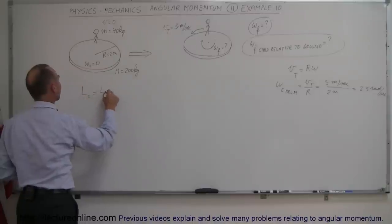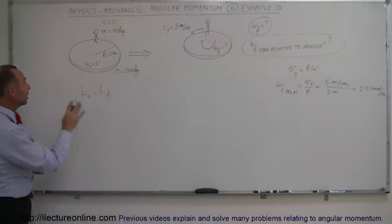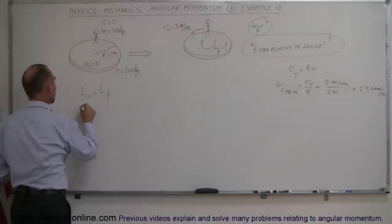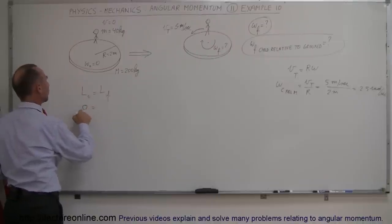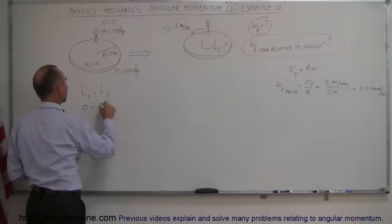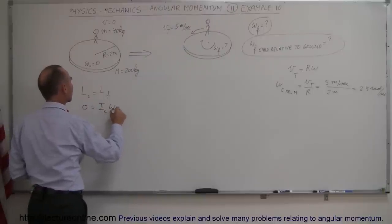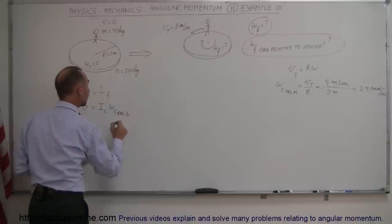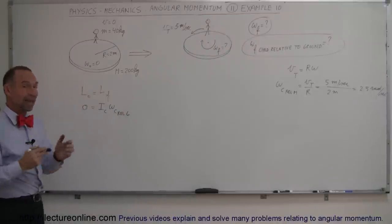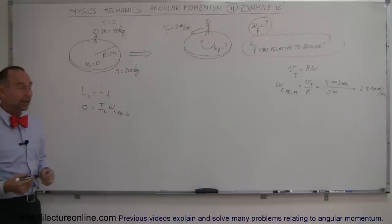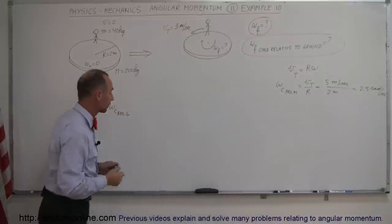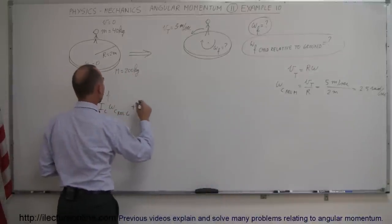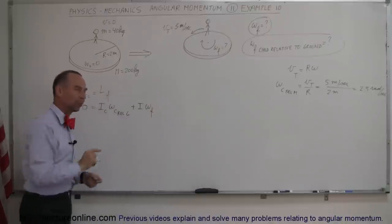The initial angular momentum must equal the final angular momentum. Since neither the child nor the merry-go-round were moving initially, we have zero angular momentum before and now the child begins to walk. So we have the moment of inertia of the child times the angular velocity of the child relative to the ground — not relative to the merry-go-round, because angular momentum is conserved relative to the earth — plus the moment of inertia of the merry-go-round times its final angular velocity, also relative to the earth.